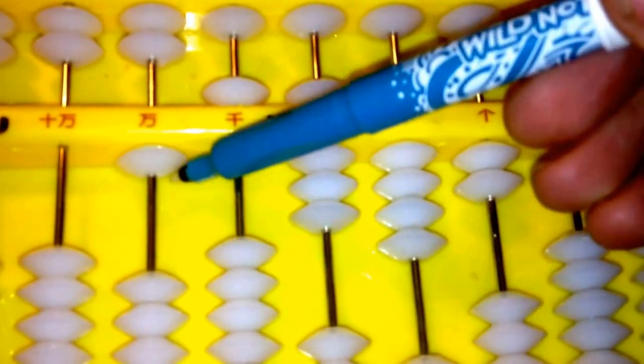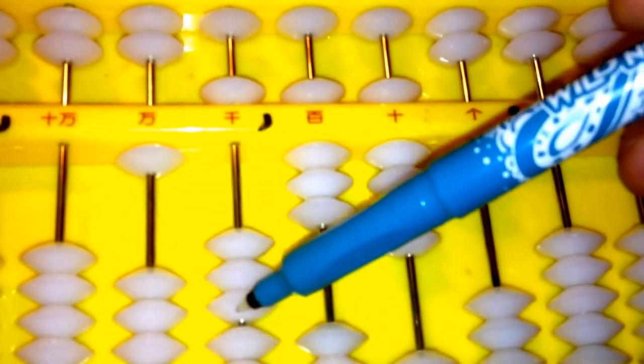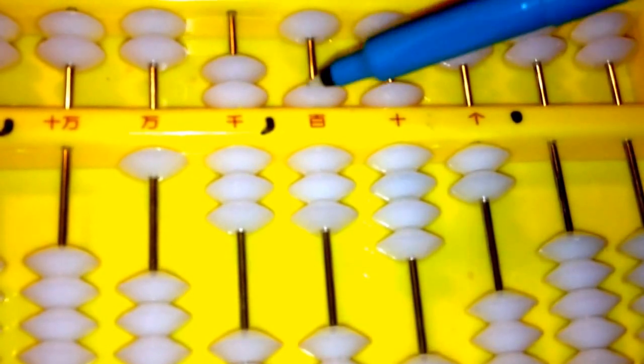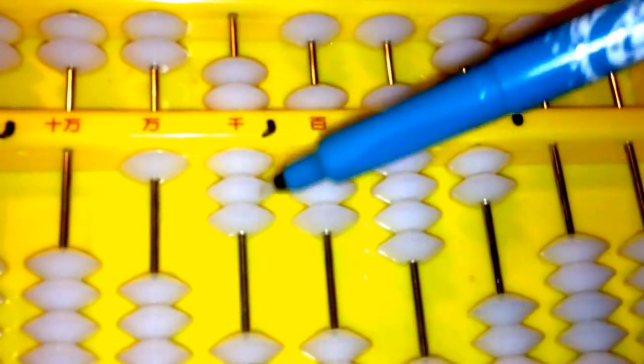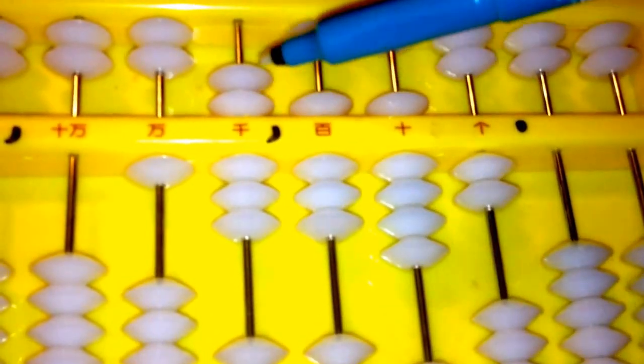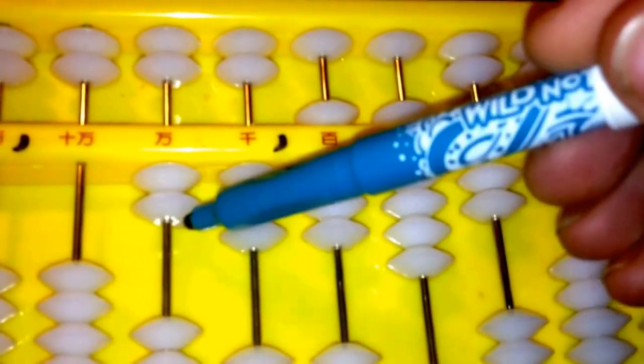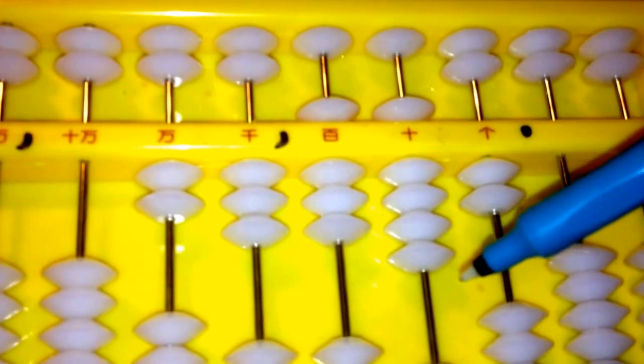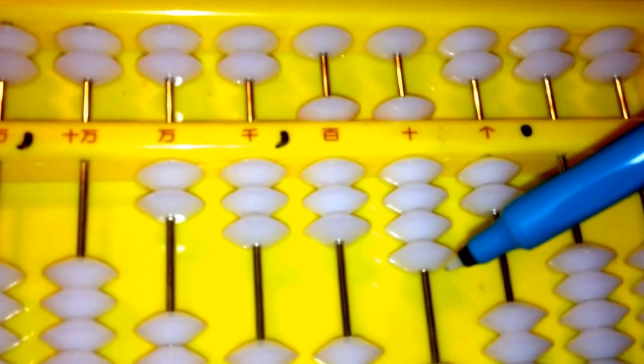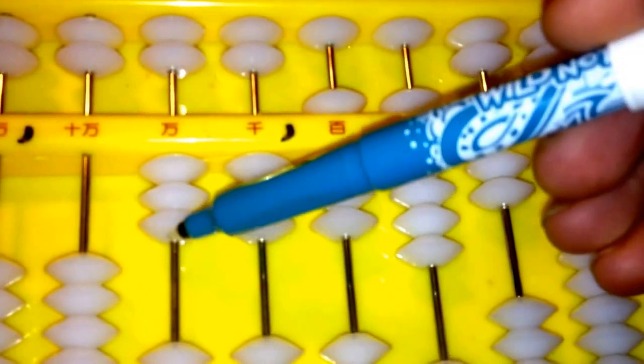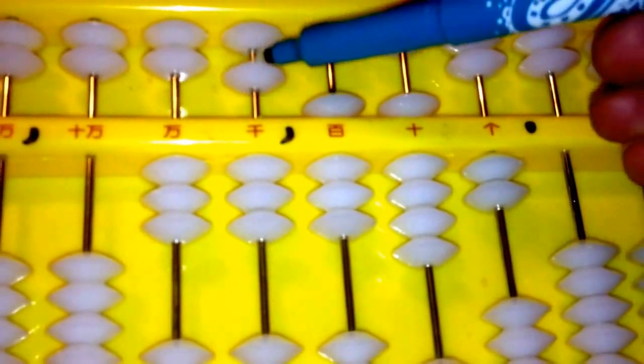So 9 times 2 is 18. So here's our 10, and our 3 and 5 is 8, and our 10. Well, we have 10 up here again. We need to move it over. Then we have 5 times 3, which is 15, so a 10 and a 5.